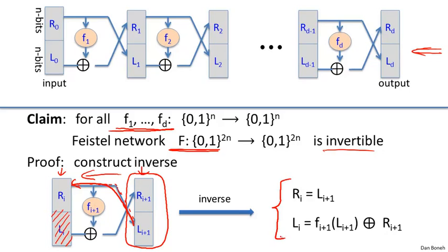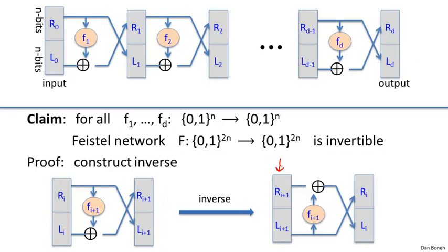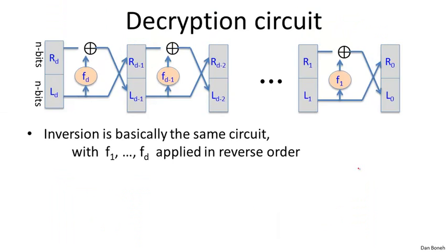If we draw this as a diagram, the inverse round takes input R_{i+1}, L_{i+1} and produces output R_i, L_i. The inverse of a Feistel round looks essentially the same as the forward Feistel round — it's literally the mirror image, the same construct. When we put these inverted rounds back together, we get the inverse of the entire Feistel network.